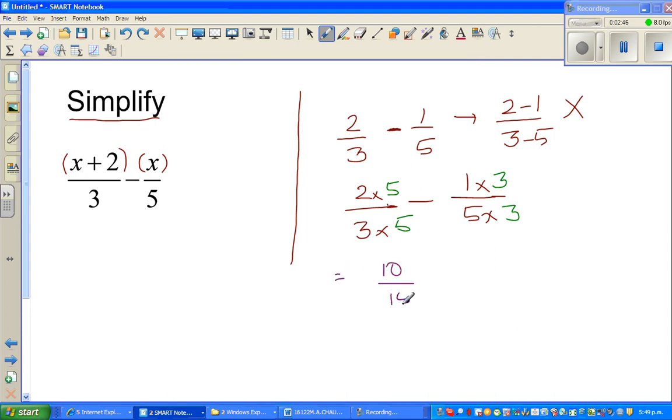So now this becomes 10 over 15 minus 3 over 15. Now both the denominators are equal, so you can take away the numerator. So this is 7 over 15. How did I get 7? 10 take away 3 is 7. Now the same logic we're going to use here, the same approach.